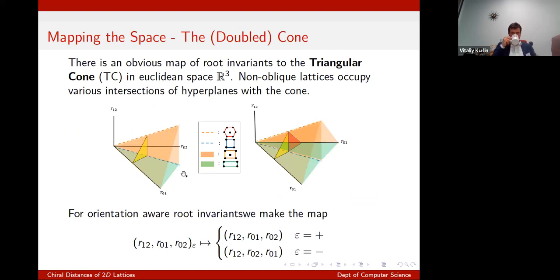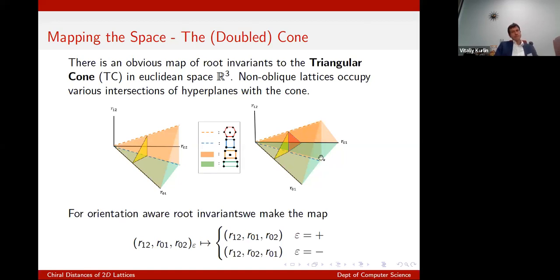This means we have a space of all two-dimensional lattices: it's a three-dimensional space, a triangular cone — all points in R3 such that the x-coordinate ≤ y-coordinate ≤ z-coordinate. Any point in that space is an isometry invariant of a lattice. If I care about rigid motion invariance and reflections, I can do some gluing of a second cone.